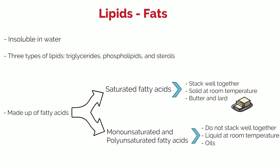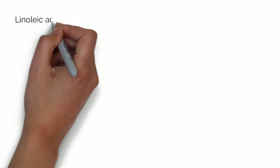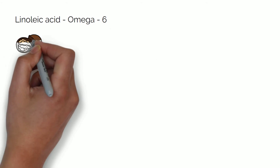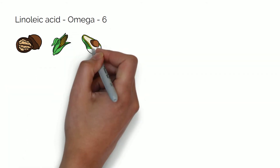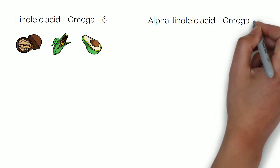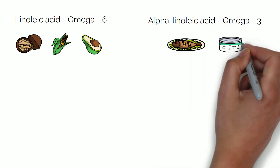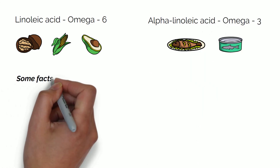Similarly to amino acids, there are two types of essential fatty acids which need to be included in our diets: linoleic acid, or omega-6, which is found in vegetable and nut oils, and alpha-linolenic acid, or omega-3, found in fish and some plant sources.